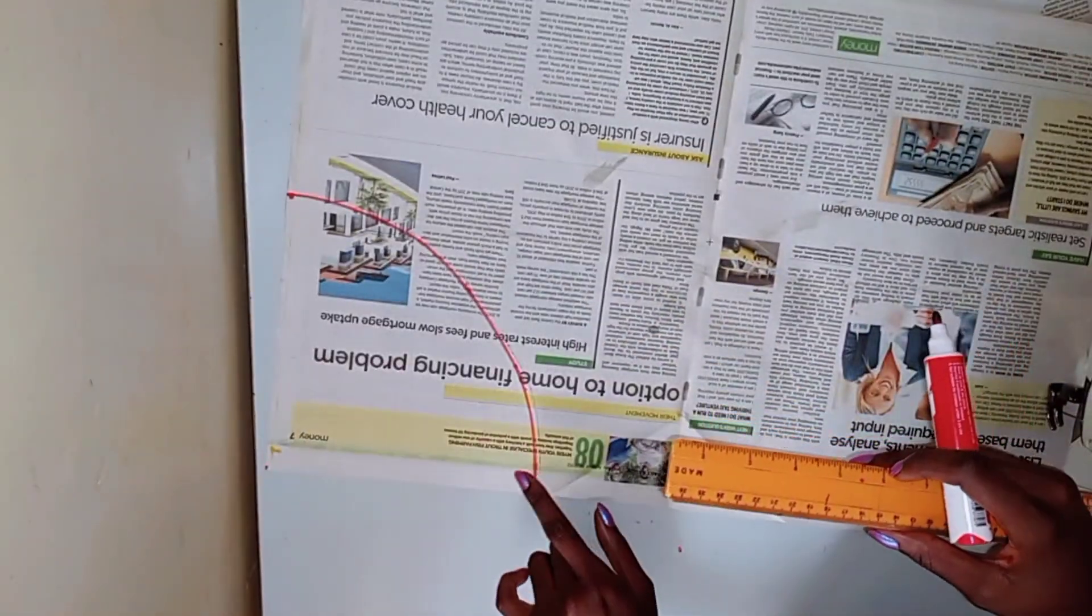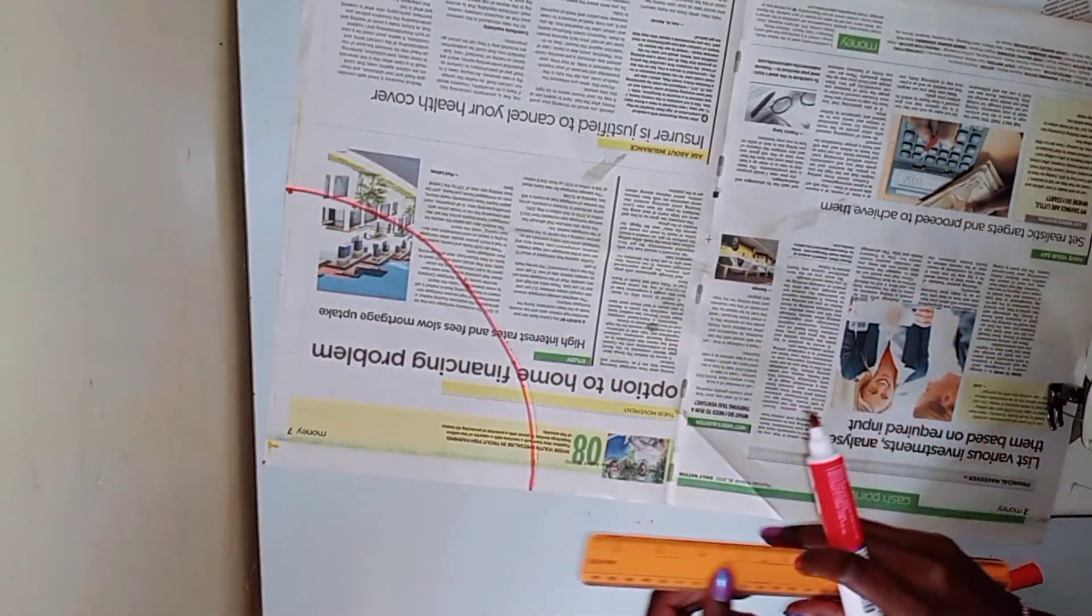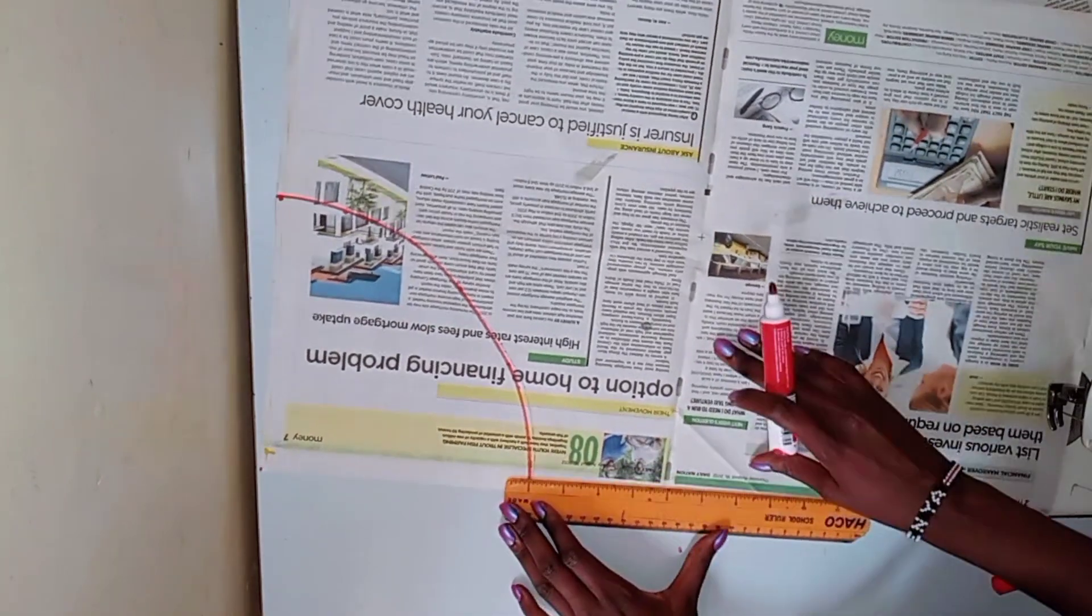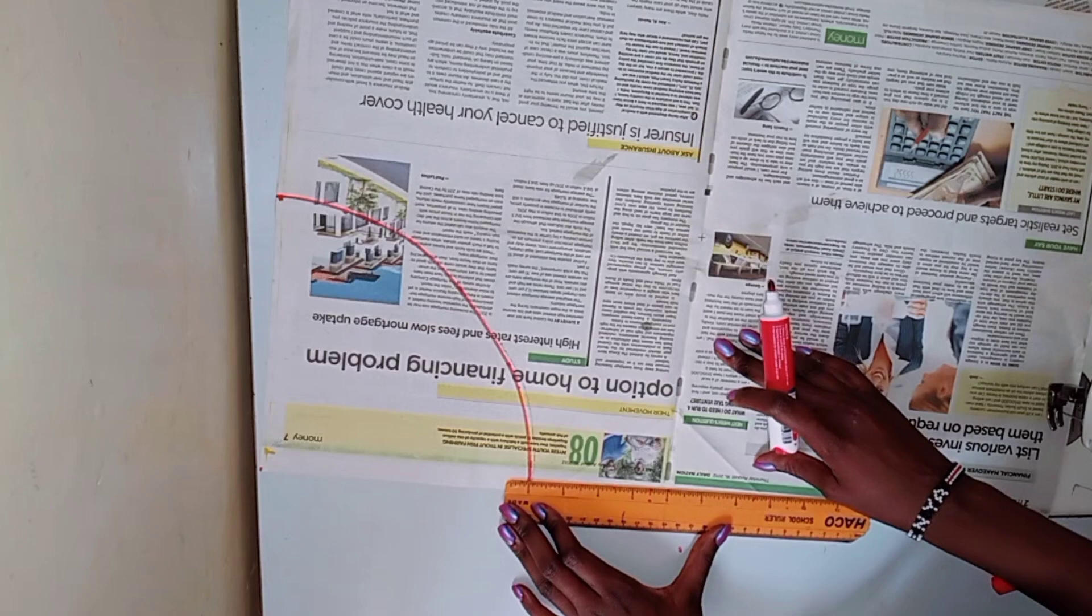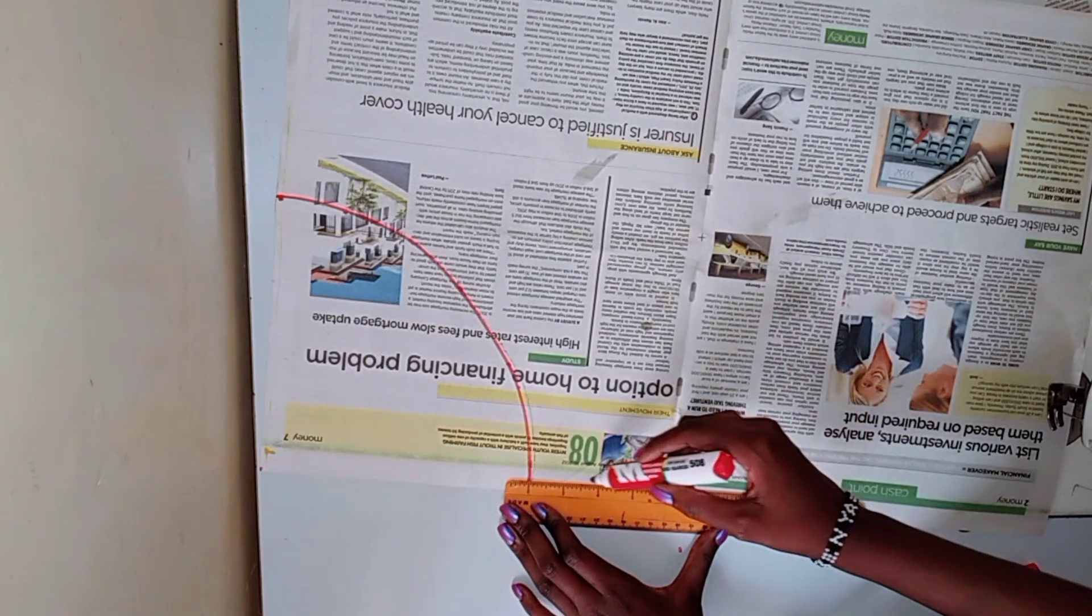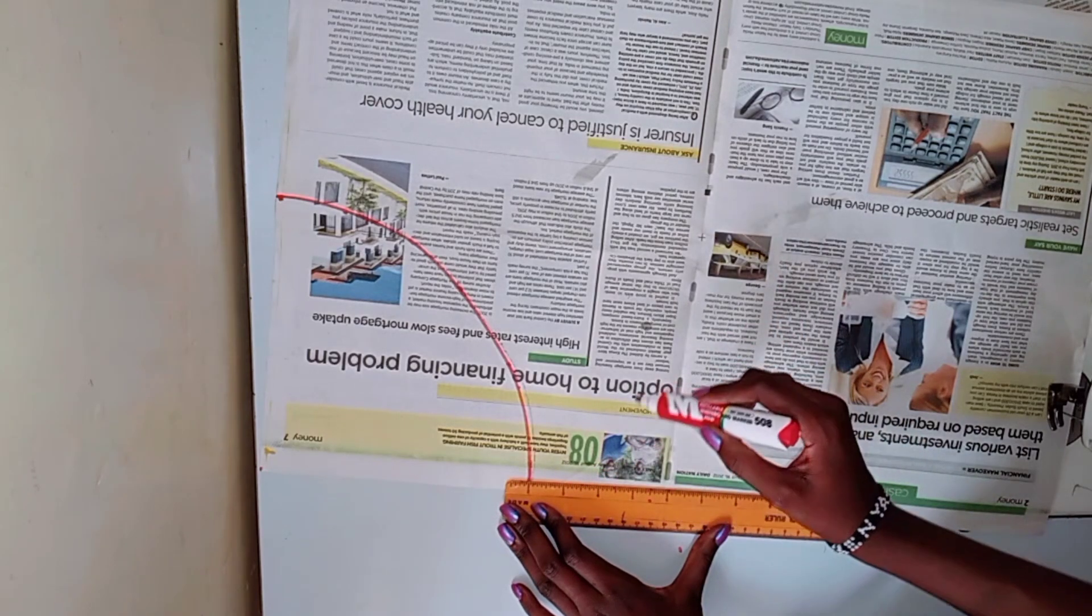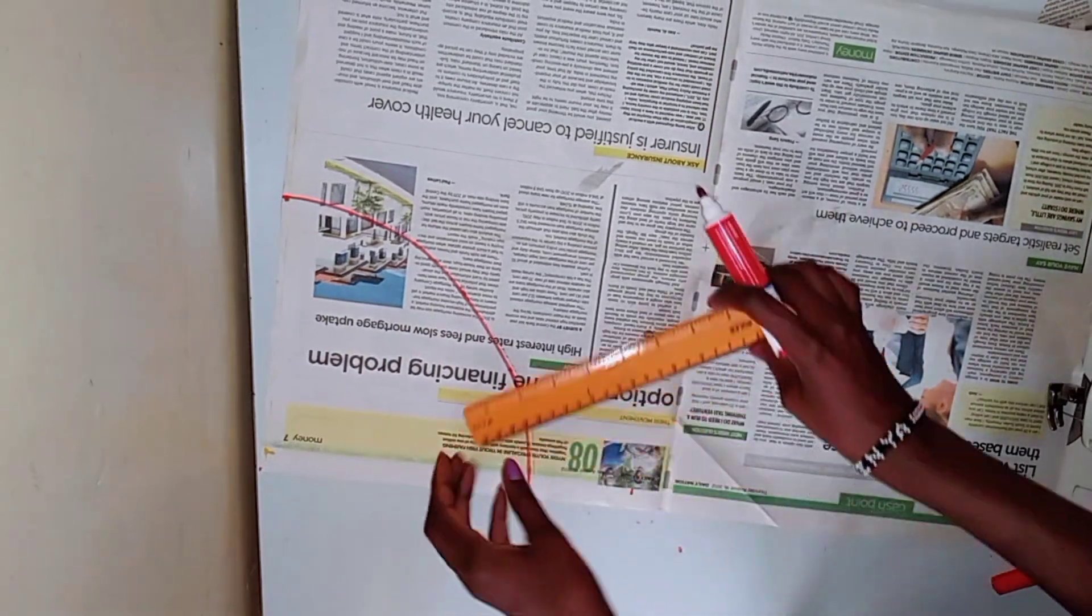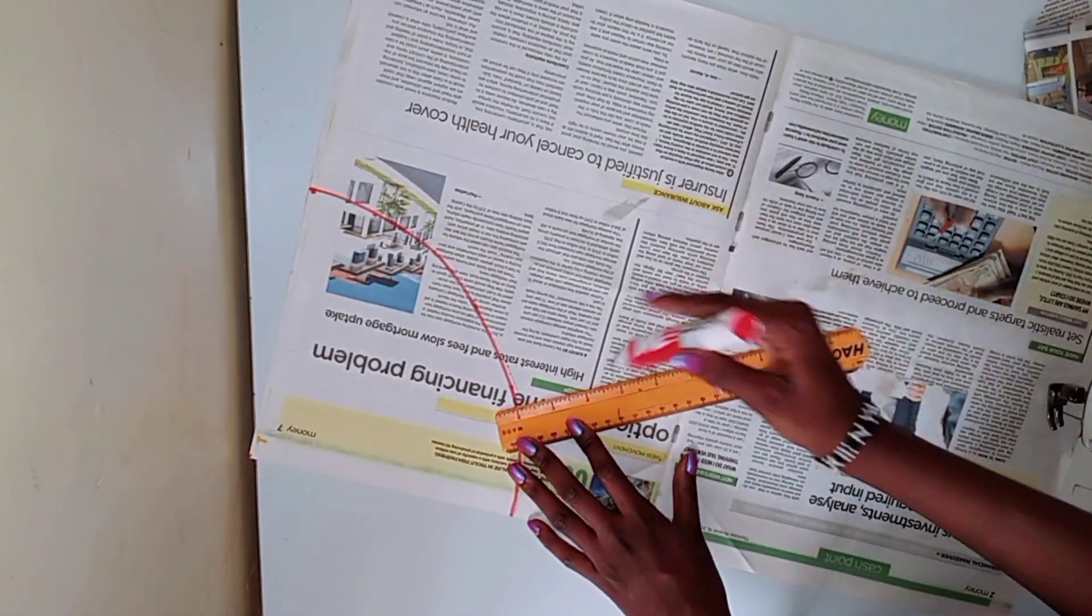Next, you're going to decide how wide you want the brim to be. It is usually around 3 inches to 3.5 inches. Personally, I'm going to use 3.5 inches. Then I'm going to add this to the 7.3 inches as you can see, and I'm going to mark it all around and connect the dots.